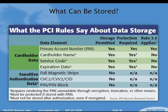The stuff in blue: full magnetic stripe data — a full copy of what's on that magnetic stripe — may never be stored to disk after authorization, ever. Secondly, card validation codes — the three or four-digit numbers on the back of most cards, or the front for American Express — those may never be stored after authorization; really should never be stored at all. And the PIN number or the encrypted PIN block — those should never hit the disk, ever.